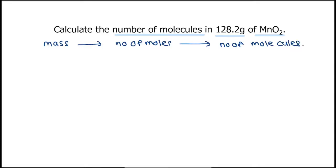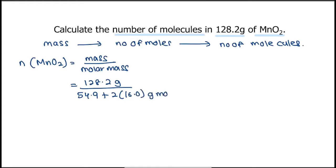Thus, number of moles of MnO2 would be mass divided by its molar mass. That would be 128.2 grams divided by 54.9 plus 2 times 16 gram per mole. The answer would be 1.4753 mole.